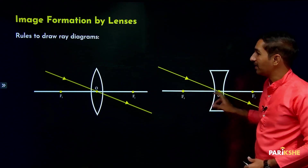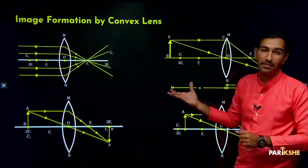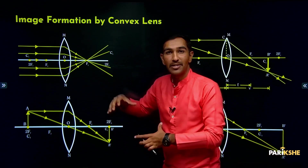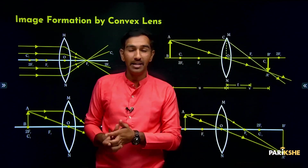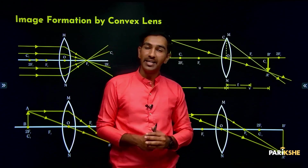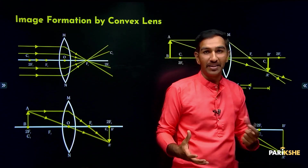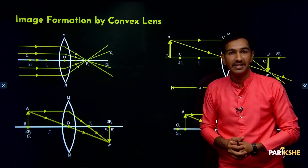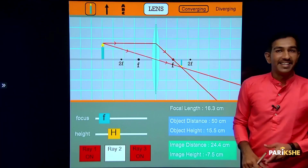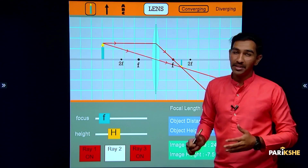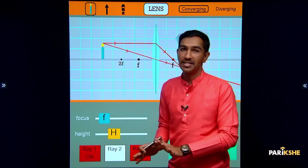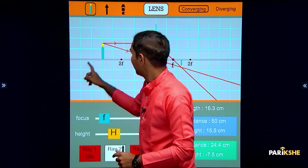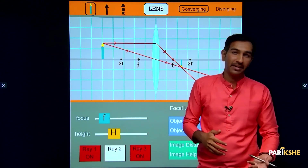Now that we've seen these rules, let's look at image formation by convex lens. I'll use the SimBucket simulation — it's much clearer with the animations. There are six different cases, and which case applies depends on where the object is placed. That is the simple key point.